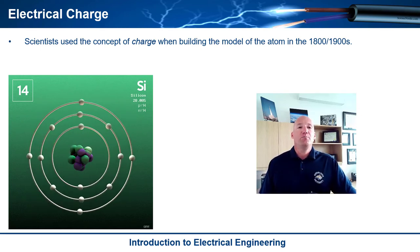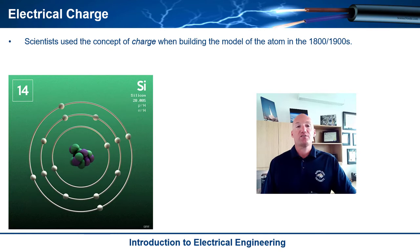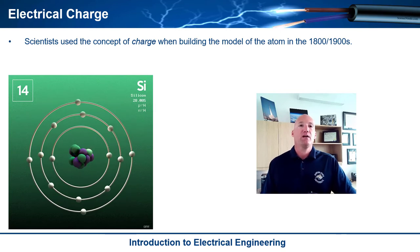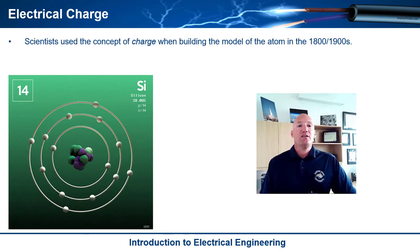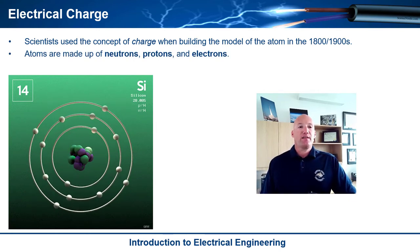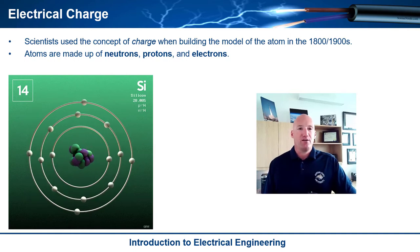So then when scientists started building up essentially the periodic table and tried to figure out how matter worked and what everything was made of, they used this concept of charge when building the model of an atom. So when you look at this image right here, you'll notice the model that they came up with. And it's a planetary model, which is not surprising because at the time that was what scientists understood about the universe, the planetary model.